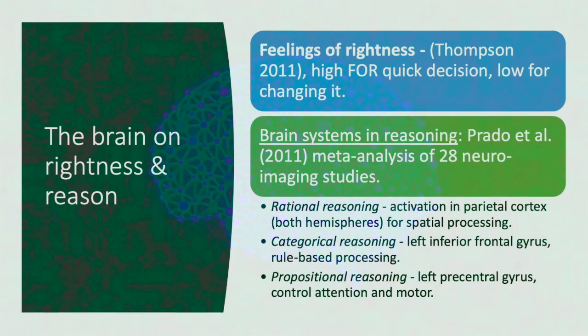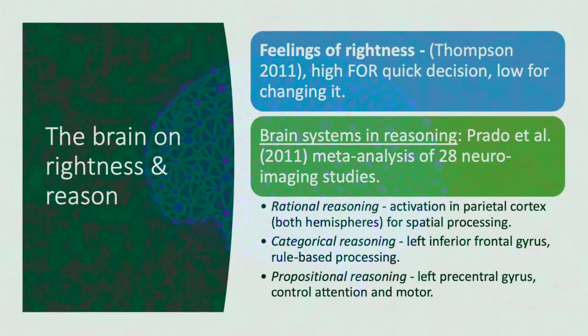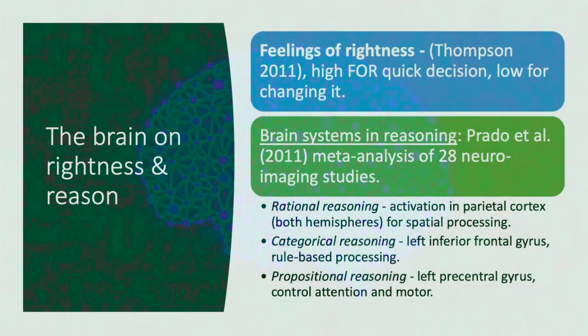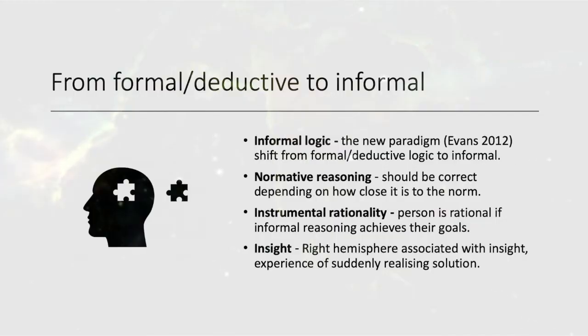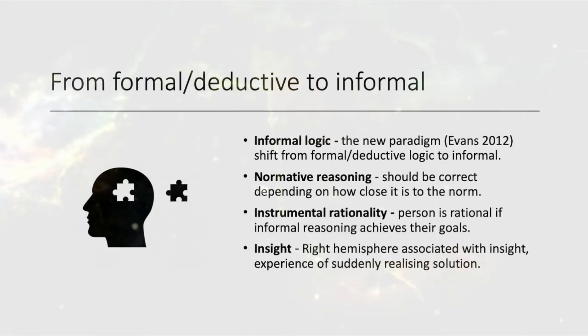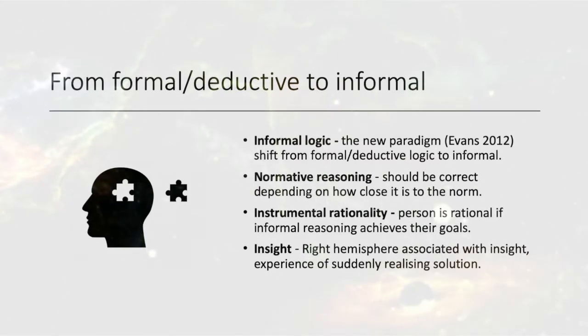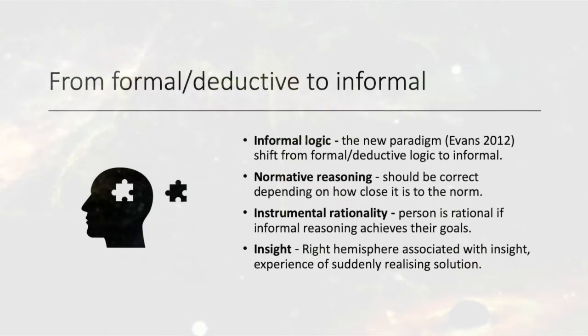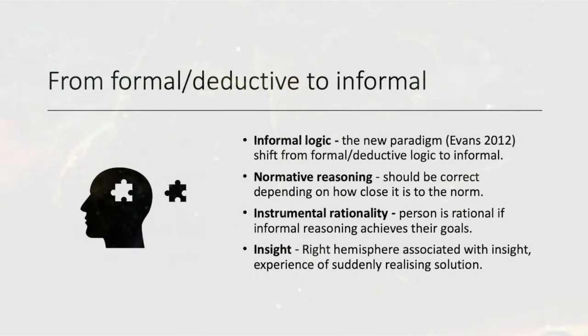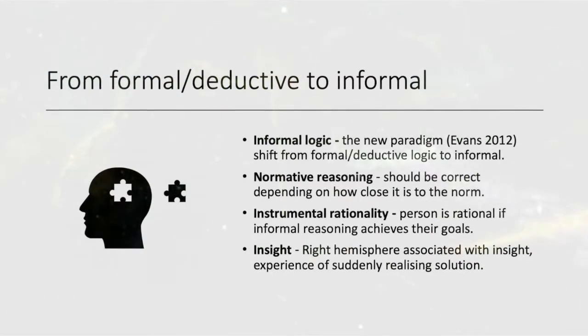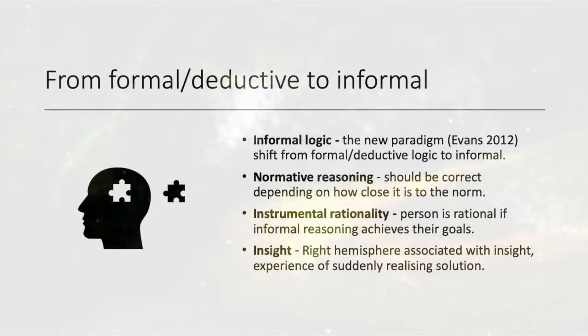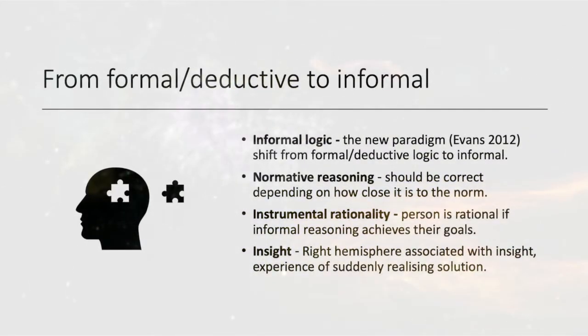From formal deductive to informal logic: informal logic was said to be the new paradigm according to Evans 2012, whereby it's a shift from formal deductive logic to the informal, a shift towards more inductive reasoning. Normative reasoning is defined as whether something is correct based on how close it is to the norm.